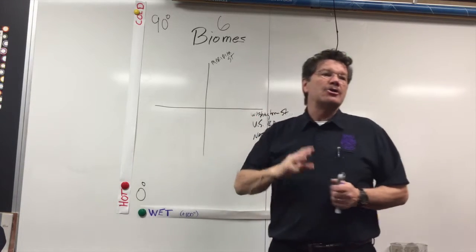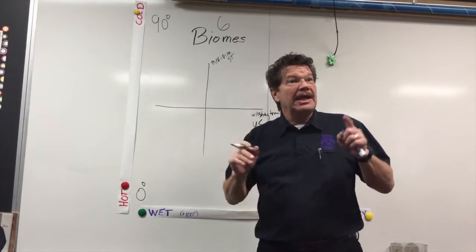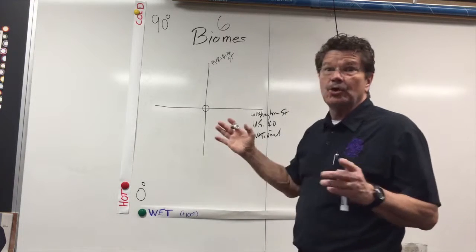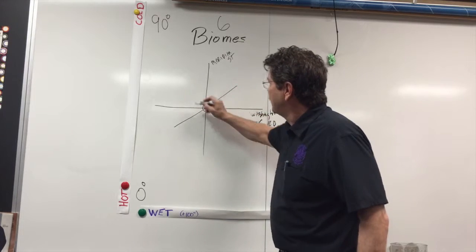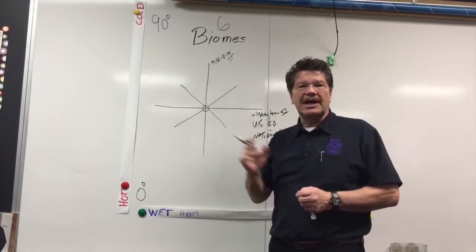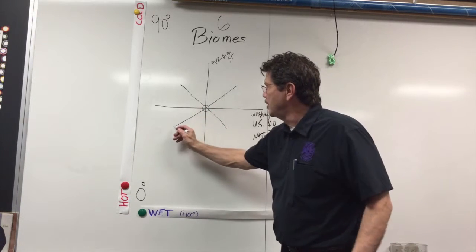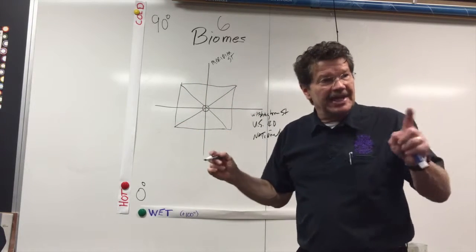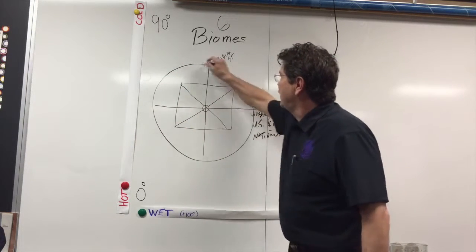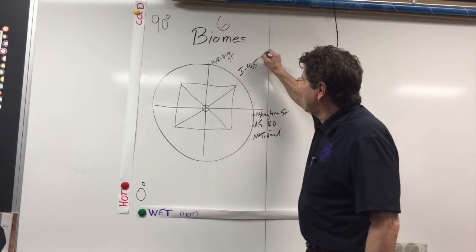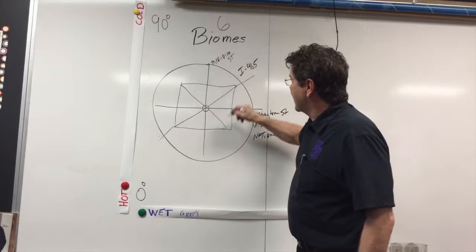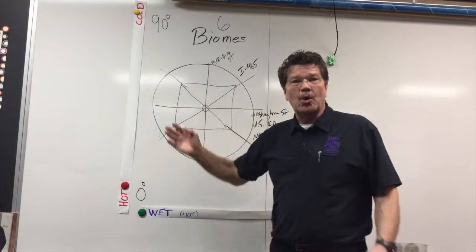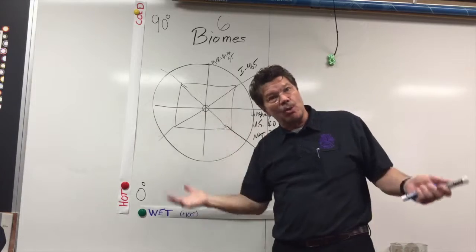The person who laid out Indianapolis also helped lay out Washington, D.C. He was an architect who said, let's put a circle right here — that's Monument Circle. Let's put roads going in different directions, including North Street and South Street. And then we came and made an interstate that goes around it — I-465. Basically Indianapolis was laid out almost like a globe: Monument Circle, Meridian Street, Washington Street. This helps me understand the world we live in.